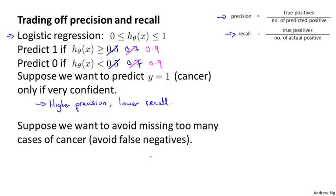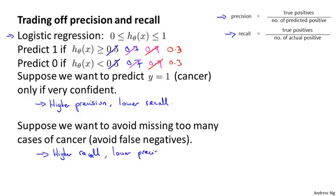In this case, rather than setting a higher probability threshold, we might instead set it to a lower value — maybe 0.3. By doing so, we're saying that if we think there's more than a 30% chance they have cancer, we should be more conservative and tell them they may have cancer so they can seek treatment if necessary. What we end up with is a higher recall classifier, because we're correctly flagging a higher fraction of all patients who actually do have cancer. But we'll end up with lower precision because a higher fraction of the patients we said have cancer will turn out not to have cancer after all.